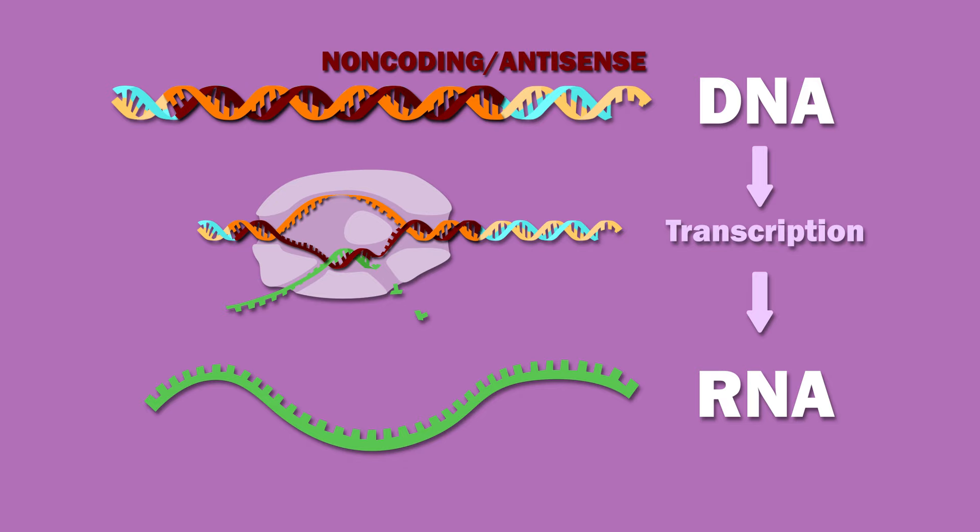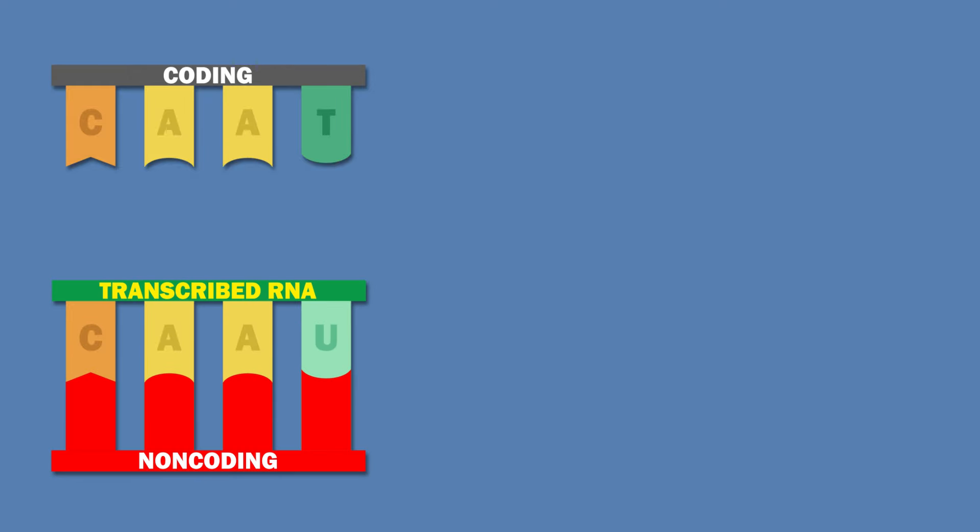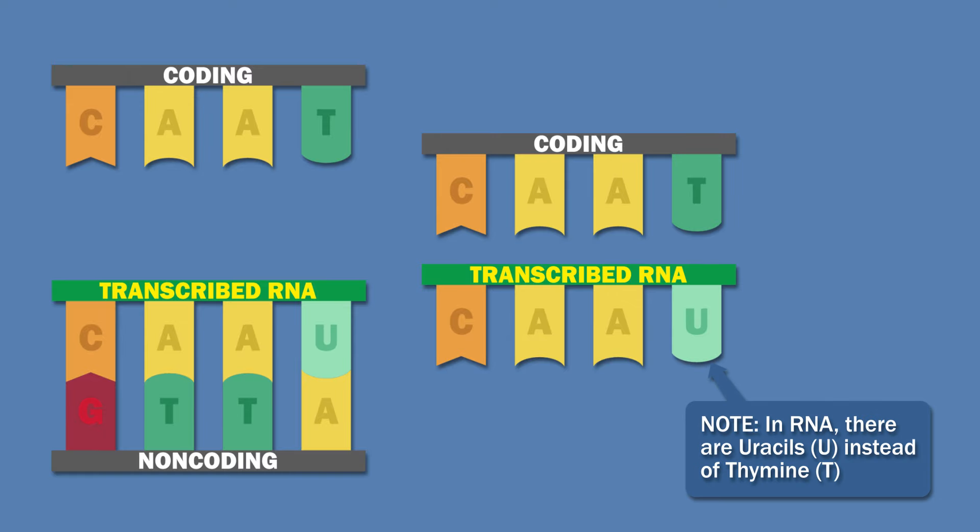The DNA which is complementary to an antisense sequence is termed a coding, or sense sequence. At first, it may seem counterintuitive that the strand which is used to transcribe RNA is called non-coding, but note that this transcribed RNA is complementary to the non-coding sequence, and so it exactly matches the coding sequence.